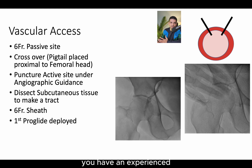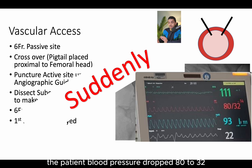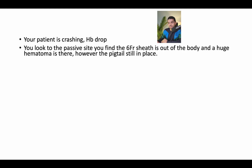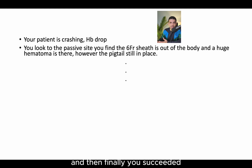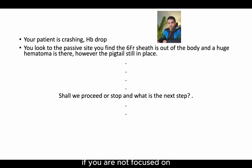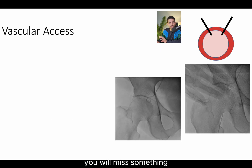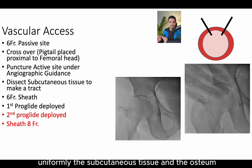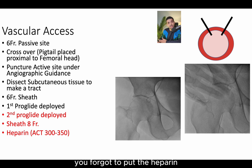While you're doing so, an experienced nurse is beside you and tells you something is wrong — the patient's blood pressure dropped to 80 over 32, heart rate is increasing, and you're losing him. On the other side, the passive side, there's a huge hematoma. You try to manage it and finally succeed. The nurse congratulates you and gives you the Amplatz Left 1 to cross the valve. However, if you are not focused on the box and start thinking about other things, you will miss steps — you miss implanting the second proglide, you miss doing the eight French sheath to dilate the subcutaneous tissue and the ostium for the arteriotomy, and you forget to give the heparin. This is the essence of why we need to think inside of the box.